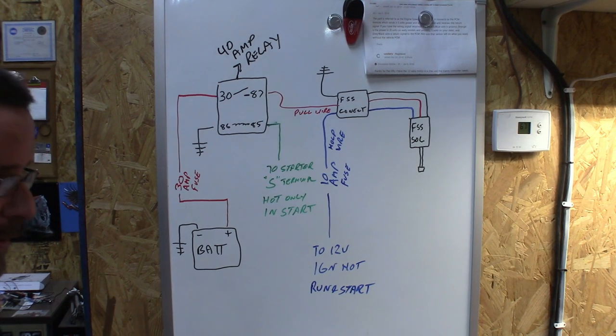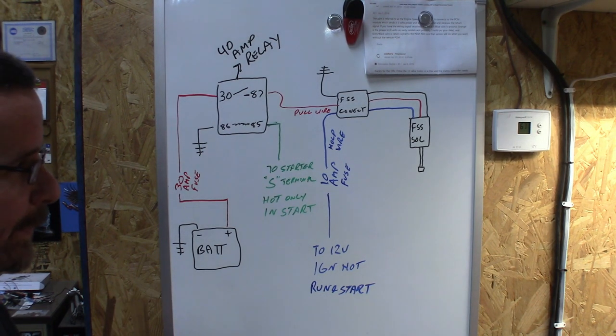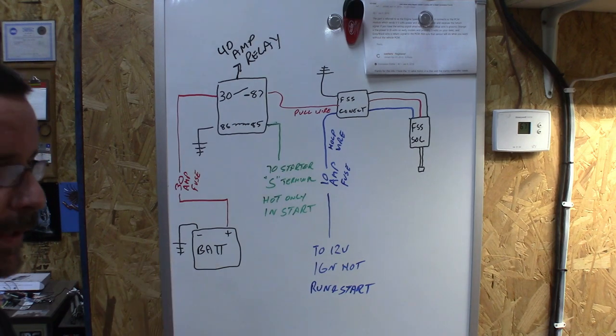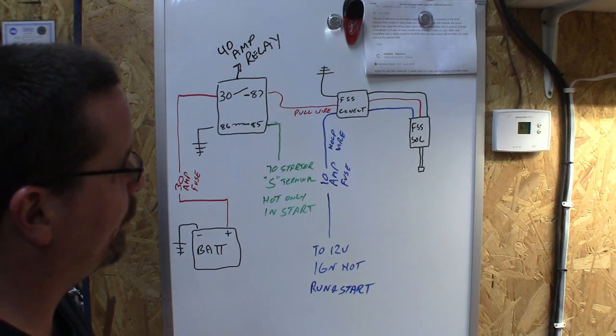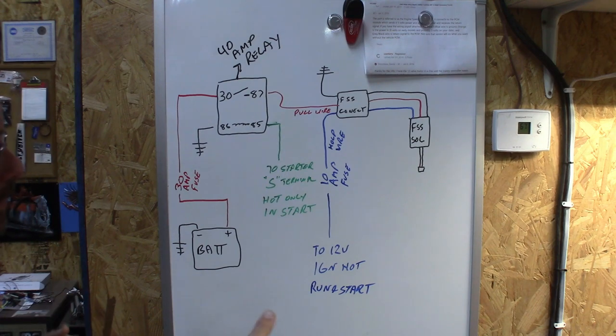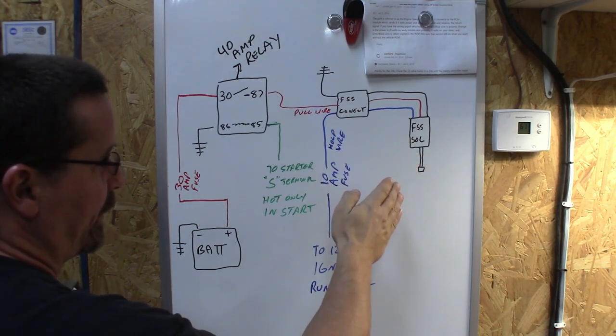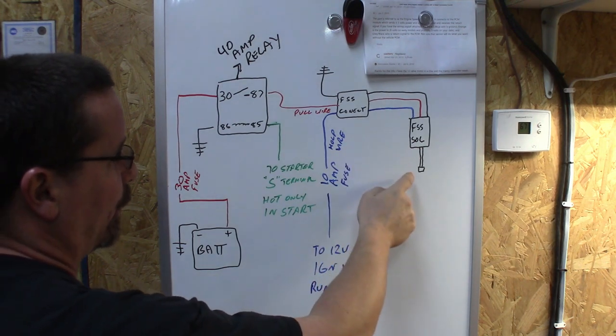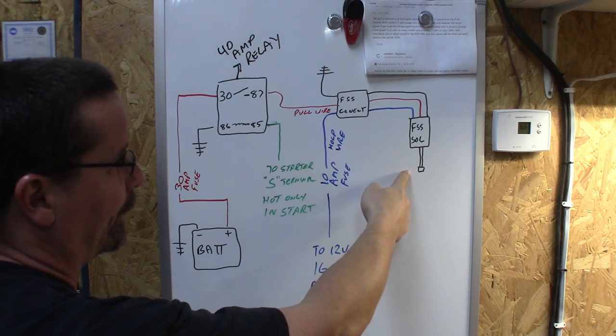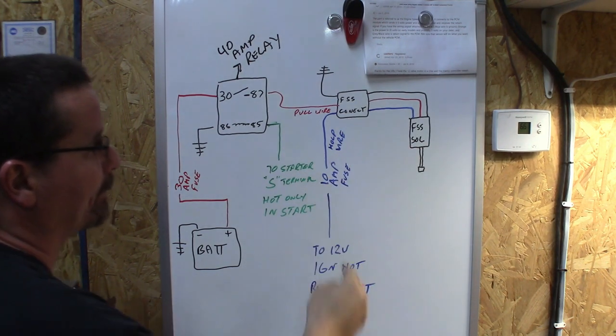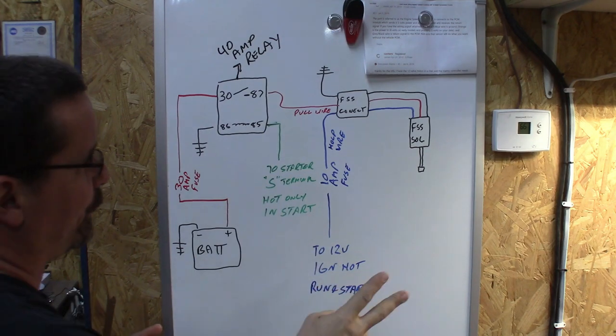Like I told you before a diesel engine needs fuel, air, and something to turn it over. The easiest way to shut it off is to shut the fuel off. So we need to get this engine running and to do so we need to have this solenoid to pull up and stay up. It does that using two different circuits.